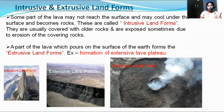In the earlier class we came across two different types of landforms: first order landform and second order landform. Oceans and continents together are called first order landforms. Due to internal processes, the formation of mountains, plains, deep valleys, and plateaus are called second order landforms. Some part of the lava may not reach the surface and may cool under the surface and become rocks — these are called intrusive landforms. They are usually covered with older rocks and are exposed sometimes due to erosion of the covering rocks.